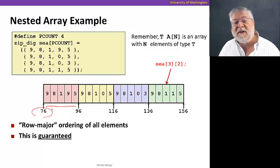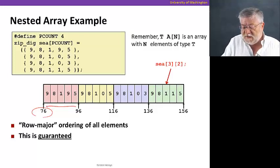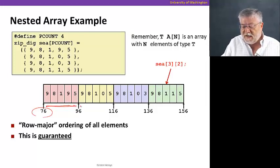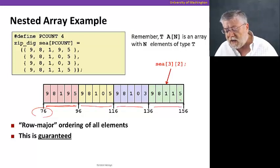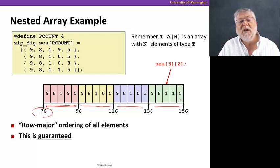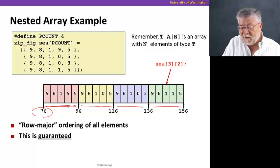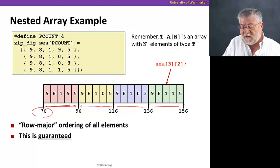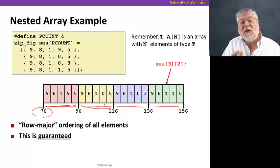Here we see the five digits of that first zip code, 98195, and then it's immediately followed by the next one, and the next one, and the next one. These are stored in what is called row-major order. In other words, we've taken one row of the array and completely put that into memory one right after the other, as if it was a one-dimensional array. Then we follow that with the next row and all its five elements, and then the next row and its five elements, and so on.